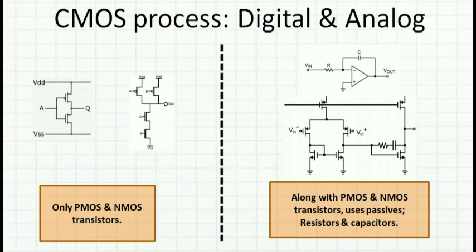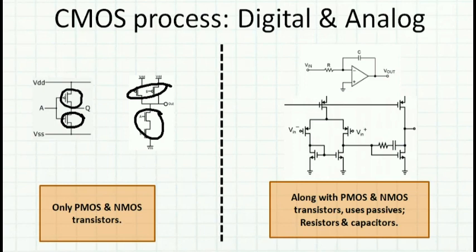In digital processes we have PMOS and NMOS transistors. For example, an inverter is made up of a PMOS transistor and NMOS transistor, and a AND gate or NAND gate also has PMOS and NMOS transistors. Whereas in the analog process, we have PMOS and NMOS transistors and in addition we have passive elements — the resistors and the capacitors.